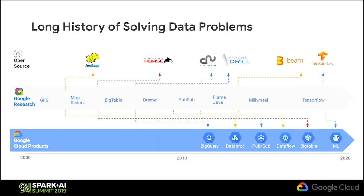If you look at this slide carefully, it gives you a picture of all the work Google did. Many of the services Google was using internally were published as papers, but they became adopted within the industry only several years later — somewhere between six to ten years in some cases. The follow-up question would be: why didn't Google just open source these projects and drive adoption itself? The fundamental reason is that Google's internal infrastructure back then was not aligned with what customer infrastructures look like today. So even if we had open sourced the projects, there would have been a lot more work needed to make them ready for enterprise use cases.